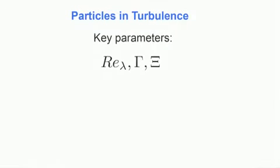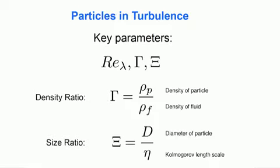The key parameters in such a problem are the Reynolds number, the density ratio, which is the ratio of the particle density to the fluid density, and the size ratio, which is the ratio of the particle diameter to the smallest relevant length scale of the flow.